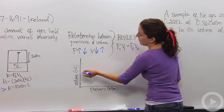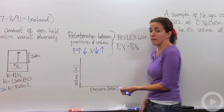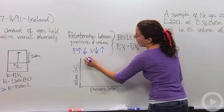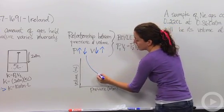How do we graph that? If we have volume on the y-axis and pressure on the x-axis, and we graph all our points, it would have a graph that looks similar to this.